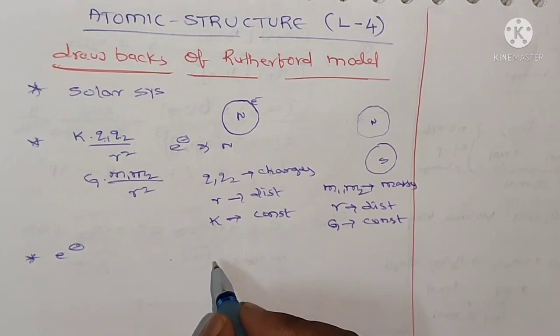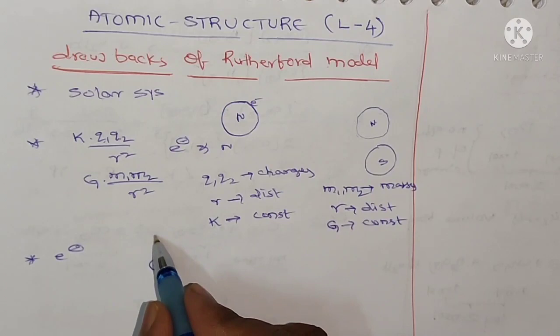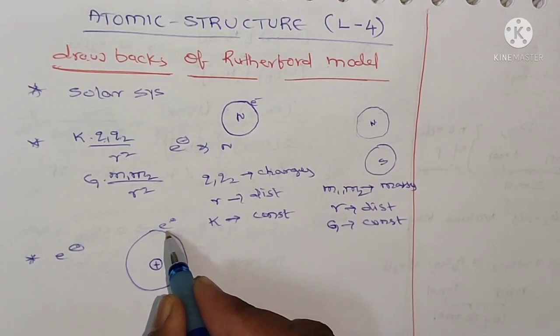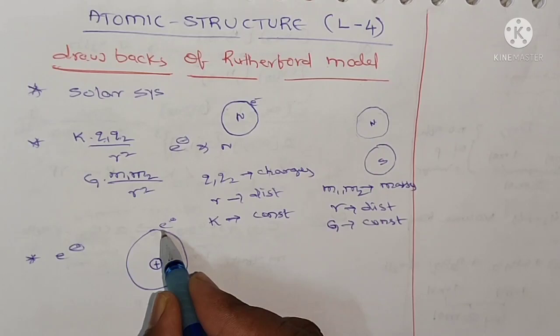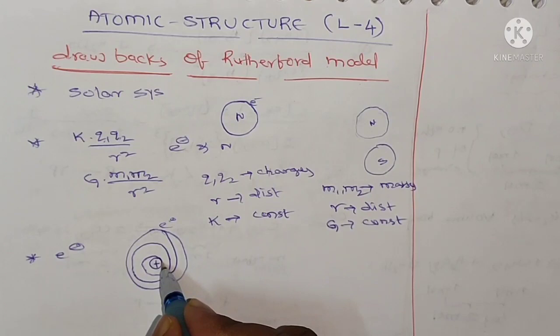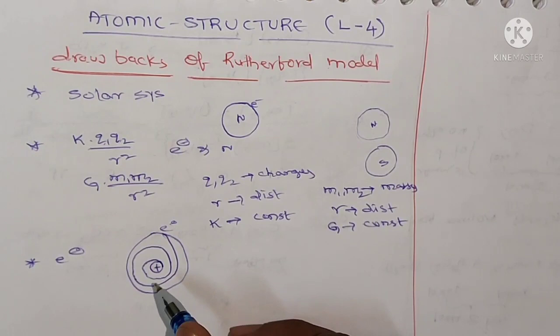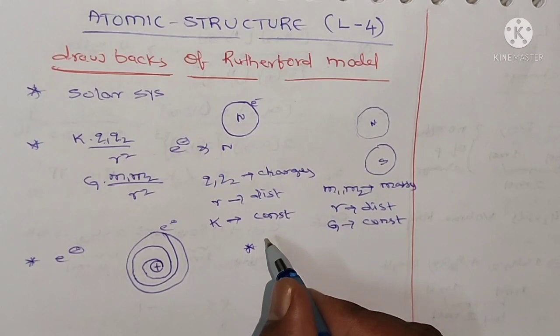Rutherford did not explain why, while electrons revolve around the nucleus in a circular path, they should lose energy and fall into the nucleus — yet the atom does not collapse. He did not give any explanation for it. So Rutherford did not explain the stability of the atom.